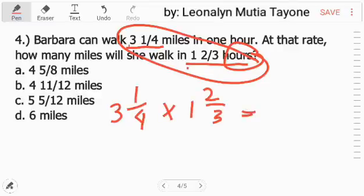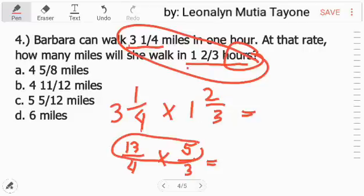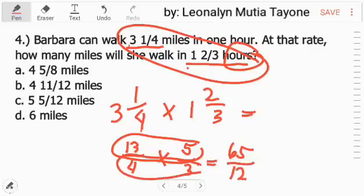When we multiply fractions, these mixed numbers, we need to convert them to improper fractions. 4 times 3 equals 12 plus 1, 13 over 4 times. 3 times 1 equals 3 plus 2 equals 5, 5 over 3. So we can multiply now. Numerator to numerator, and that is 65. Denominator to denominator, 4 times 3, that is 12.